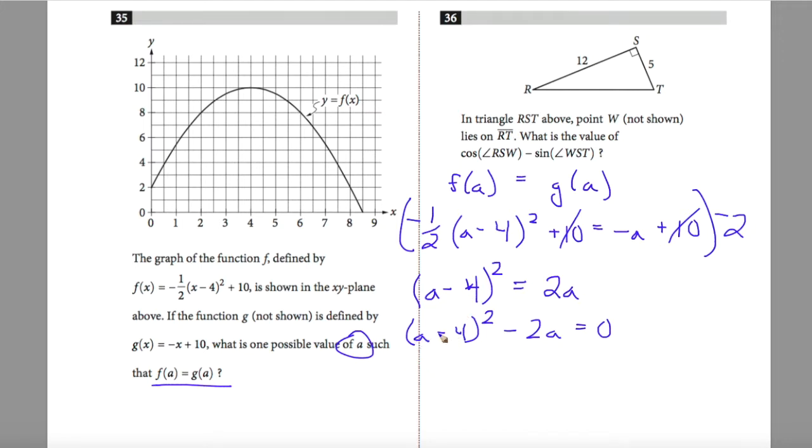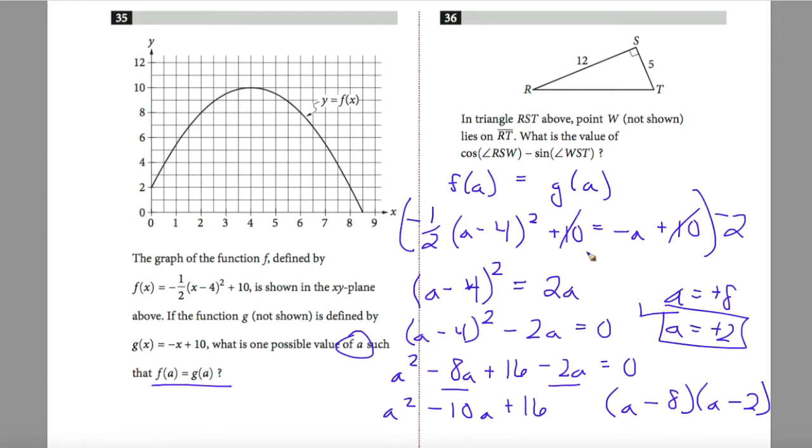When I do this, I know that since both terms are negative, the middle terms will be added together, and this becomes a squared minus 8a plus 16 minus 2a equals 0. I can combine my like terms. Here I end up getting a squared minus 10a plus 16. If I factor this, I have (a minus 8)(a minus 2). Two possible values are a equals positive 8 or a equals positive 2. I generally put in positive 2.